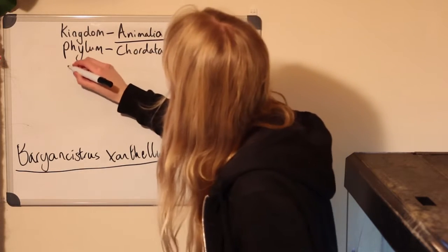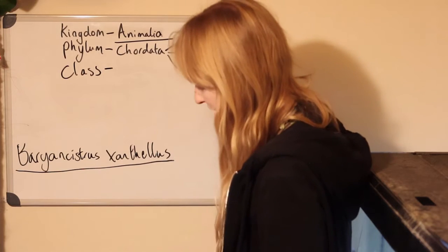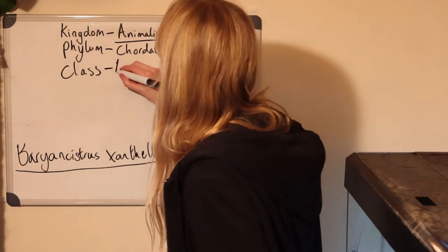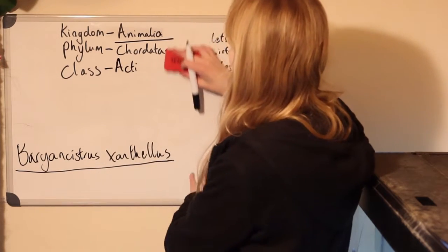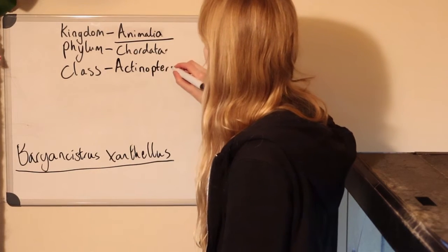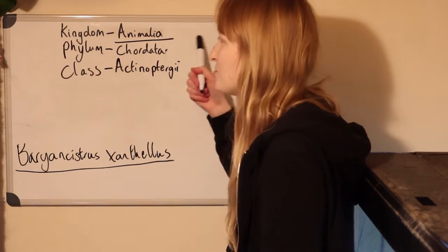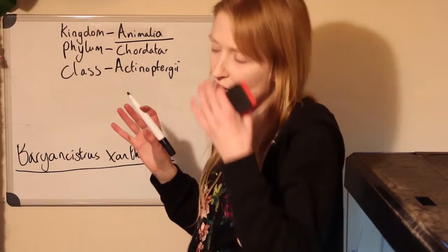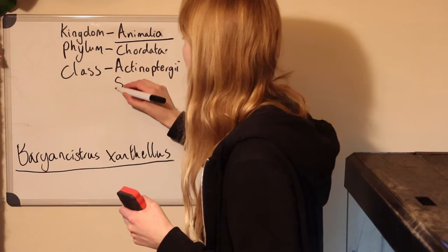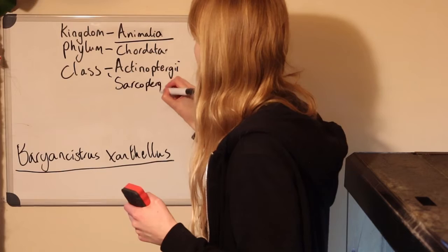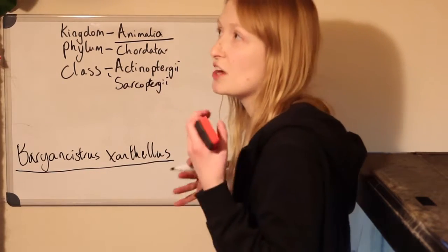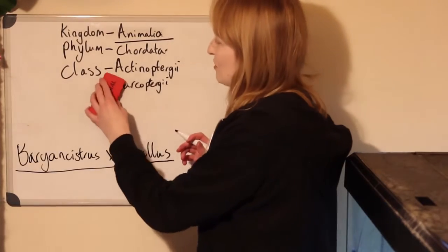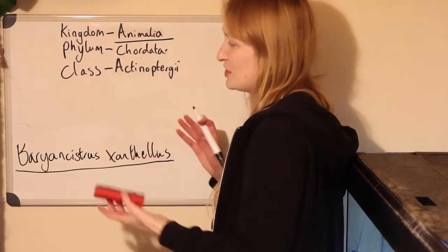Next, under phylum, let's look at class. In Chordata there are many different classes, but we're going to look at the one that Baryancistrus xanthelus is in — Actinopterygii. This is your ray-finned fishes. The other very similar, closely related class is Sarcopterygii. Sarcopterygii includes your lungfishes, coelacanths, and also your tetrapods — that is mammals, birds, amphibians, and reptiles. That's where mammals really fit into fishes, but I've done a video on that anyway.